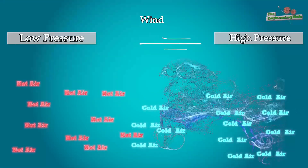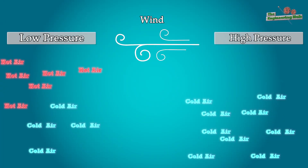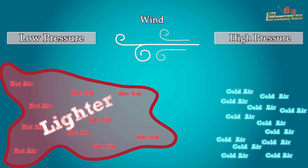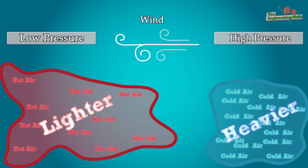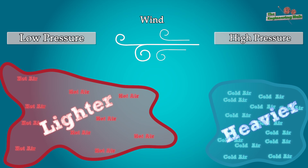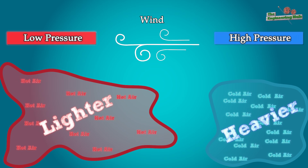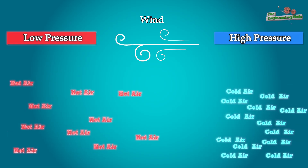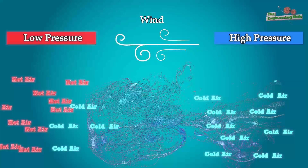Wind is movement of air generally caused by differences in temperature. Hot air is lighter, with its particles spread further apart. And cold air is heavier, with its particles closer together. Regions of lighter, hotter air are at lower pressure than adjacent, colder, heavier air. So the cold air moves from high pressure to low pressure, thus causing wind.